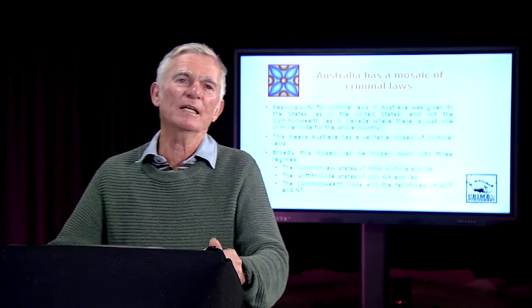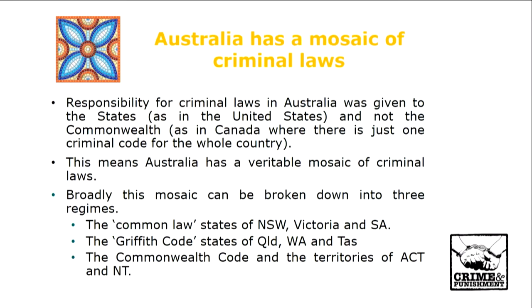The purpose of this talk is to inform you and get you to understand that the criminal laws in Australia differ greatly. They differ greatly because responsibility for criminal laws in Australia was given to the states, as in the United States, and not the Commonwealth, as was the case in Canada, where there's just one criminal code for the whole country. So if you were to be charged in Canada with a criminal offence, it wouldn't matter whether it took place in Vancouver or Toronto or Montreal because they have the one criminal jurisdiction. Canada chose in its founding constitutional document to give criminal laws to the federal government, unlike Australia, which gave responsibility to the states.